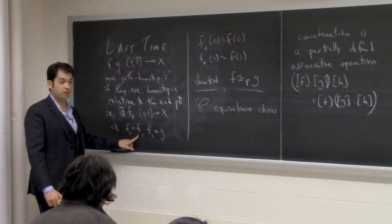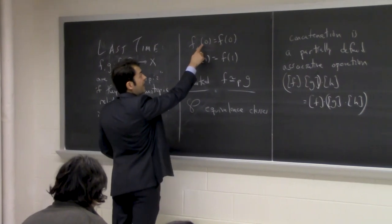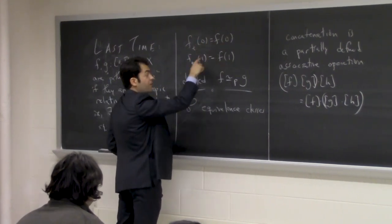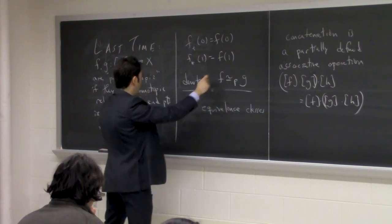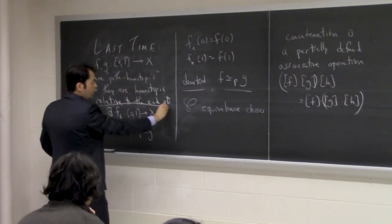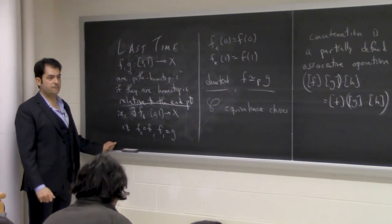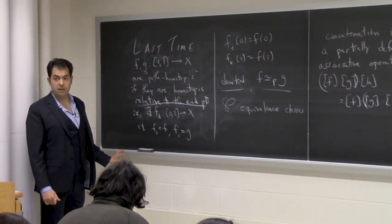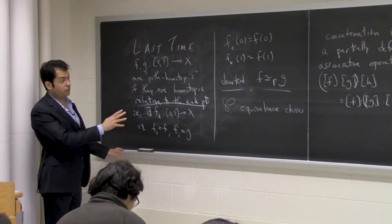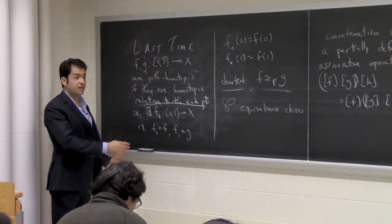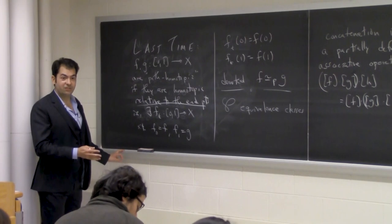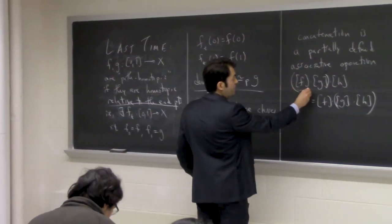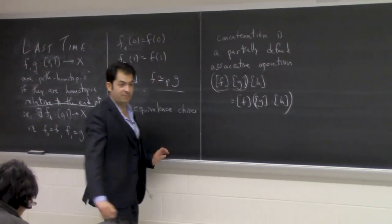F sub 0 is f, and f sub t has its left endpoint fixed — it's always the same point — and the right endpoint is also fixed. That's what we mean by relative to the endpoints. We have a partially defined associative operation. It's partially defined because you can only concatenate if the right endpoint of this path is the same as the left endpoint of that path.